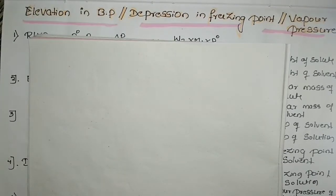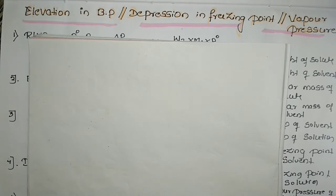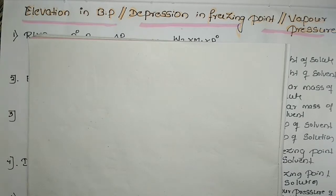Hello students. This video is about the next part of the solution chapter, covering formulas regarding the colligative properties of solutions. As we studied in the theory part, there are four colligative properties: relative lowering of vapor pressure, depression in freezing point, elevation in boiling point, and osmosis and osmotic pressure. The questions that appear in competitive exams like CET and NEET are based on these formulas, so you have to remember them to solve problems.